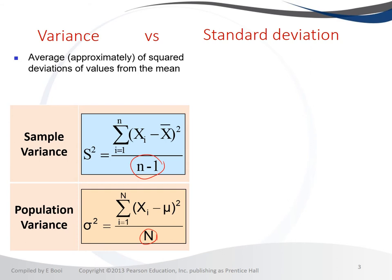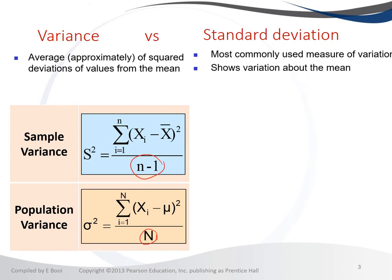Now let's look at the standard deviation, which is commonly used as a measure of variation. We will use the standard deviation when we do confidence intervals, sampling distributions, and hypothesis testing — we will constantly be using it. We are also able to interpret the standard deviation because it shows how far apart your data are from the mean.